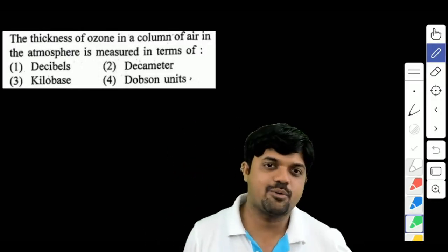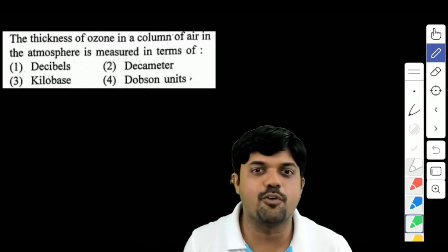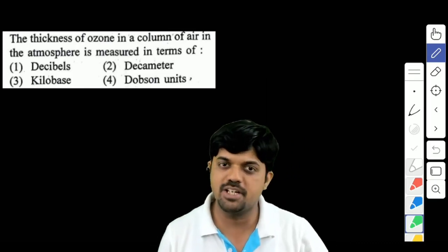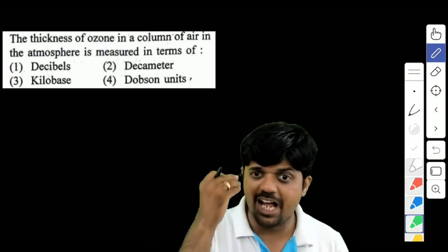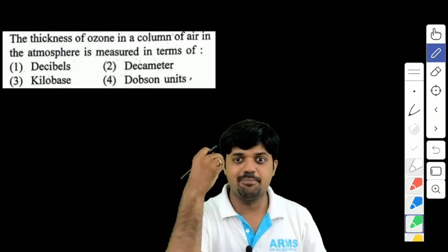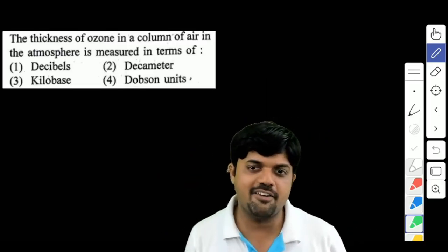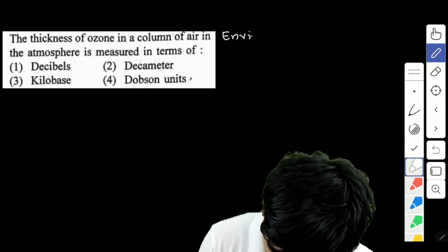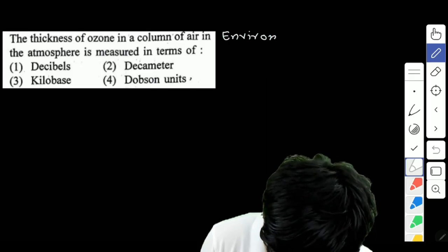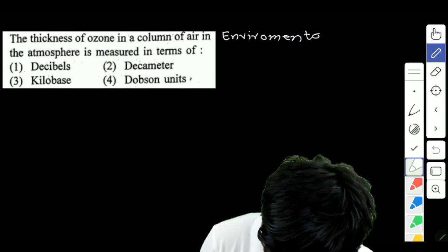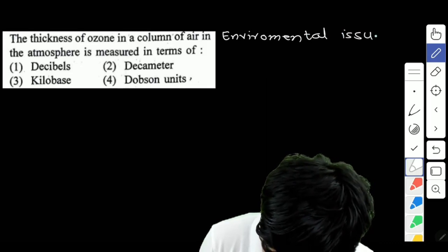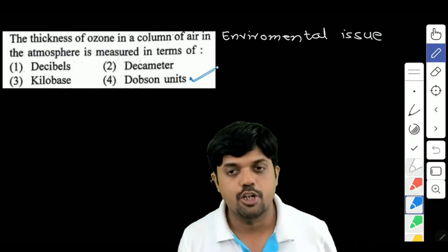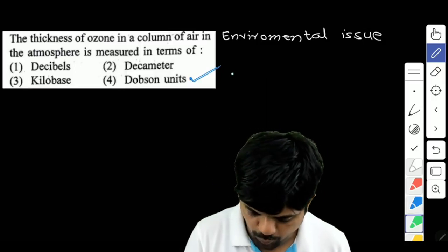One more very easy and direct question: the thickness of ozone in a column of air in the atmosphere is measured in terms of — this is a direct question from the chapter on environmental issues. The answer is option 4.